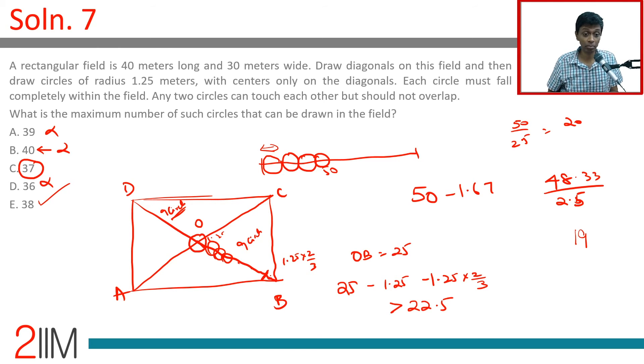Can we squeeze in 19 plus 19? That means, on BD, do we have continuous length of 19 into 2.5? 47.5 - can we get on BD to get 19? 18 is possible. That we have seen. Is 19 possible? 47.5 meters length. Is it possible? We lose this 1.25 times 2 by 3, 1.25 times 2 by 3, definitely. That is gone. So, we have only 48.33. There's got to be something spilling over from the center circle. Even if you squeeze a lot here, not right at the center. And that spillover is going to be better than this 0.83. So, we cannot squeeze 19 onto BD if AC has 19. So, BD can have a maximum of 18.